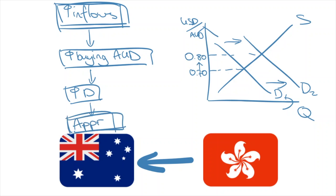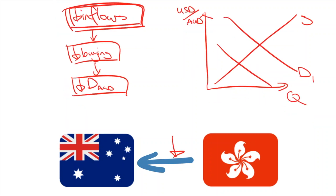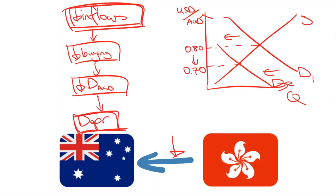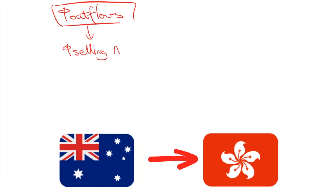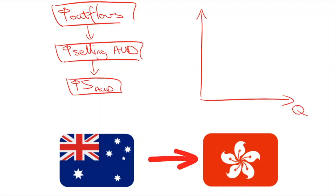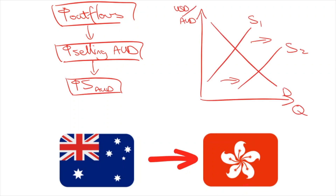And when they stop sending money to Australia, the demand goes back down, causing a depreciation. Let's also look at the flip side. What if Australia sends money overseas? Whenever this happens, we must sell Australian dollars to buy foreign currency. As we sell Aussie dollars, we are contributing to a higher supply. When you increase the supply of something, the price comes down — it depreciates.